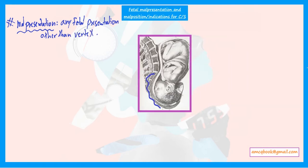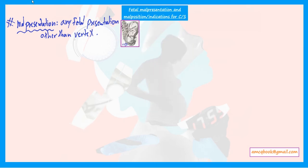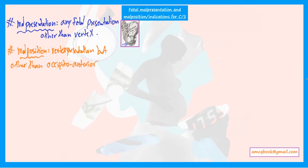Looking at this picture, this represents vertex presentation. Any presentation other than vertex presentation is called malpresentation, like breech presentation, shoulder presentation, face presentation, and others. Malposition means a vertex presentation but other than occiput anterior. The standard is occiput anterior, which means the occiput of the baby is directed anteriorly.